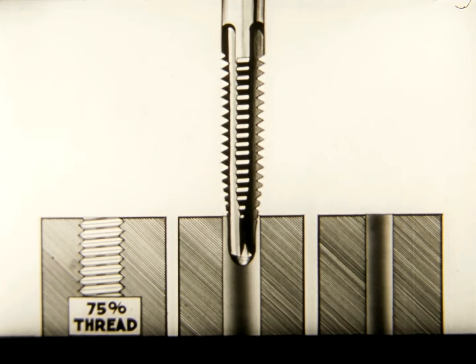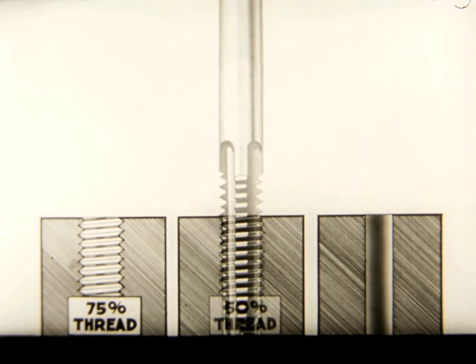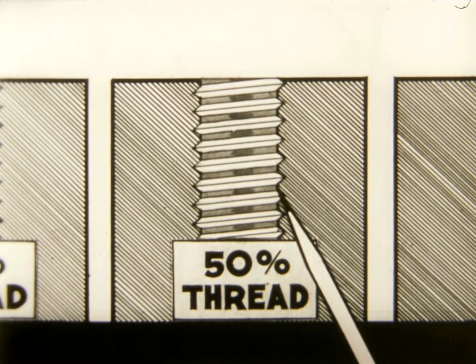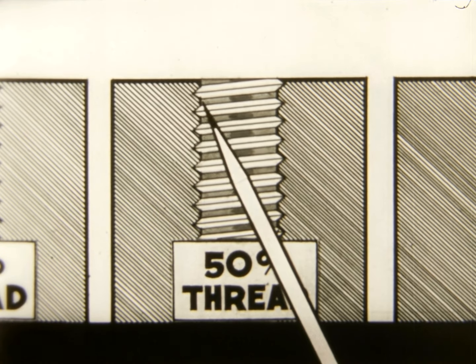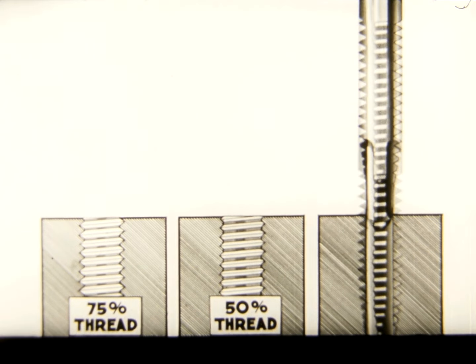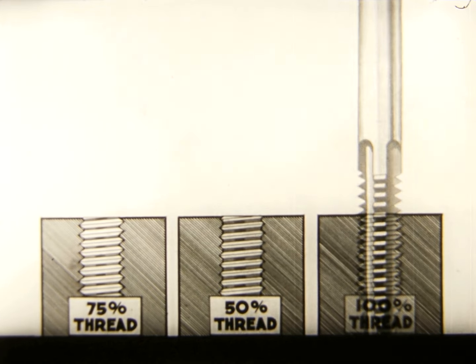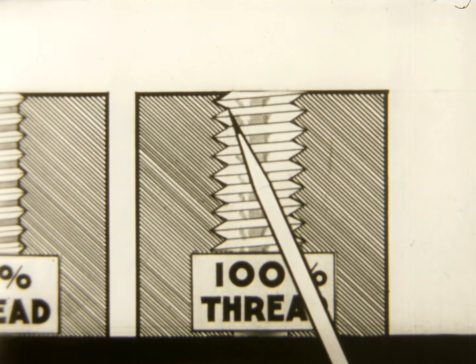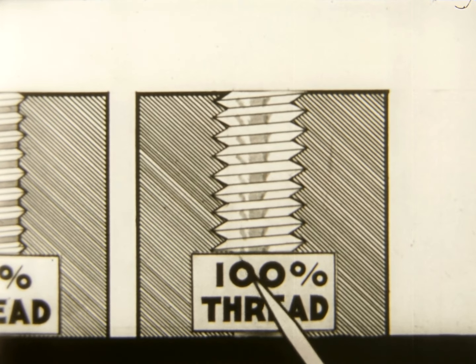If the hole is drilled too large, the tap will cut only a shallow thread, which may give us only a 50% thread, making a weak connection. On the other hand, using a hole small enough to give us 100% thread adds very little to the strength of the thread and results in the breakage of many taps.